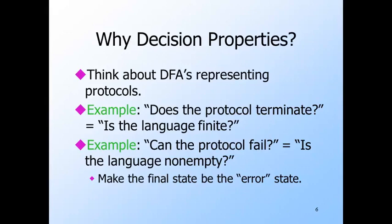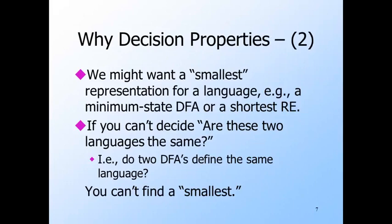We couldn't answer either of these questions about programs in general, so we couldn't get the answers about protocols by looking at the code that implements them. Another use for decision properties involves minimizing their representations. DFAs are a good representation for certain kinds of digital circuits — those that have memory. We usually want the smallest circuit, and a good first step is to find a DFA with the smallest number of states. It turns out that we can tell whether two DFAs are equivalent — whether they define the same language — and that lets us find a minimum-state DFA equivalent to any given DFA. Again, we can do none of this for programs in general.